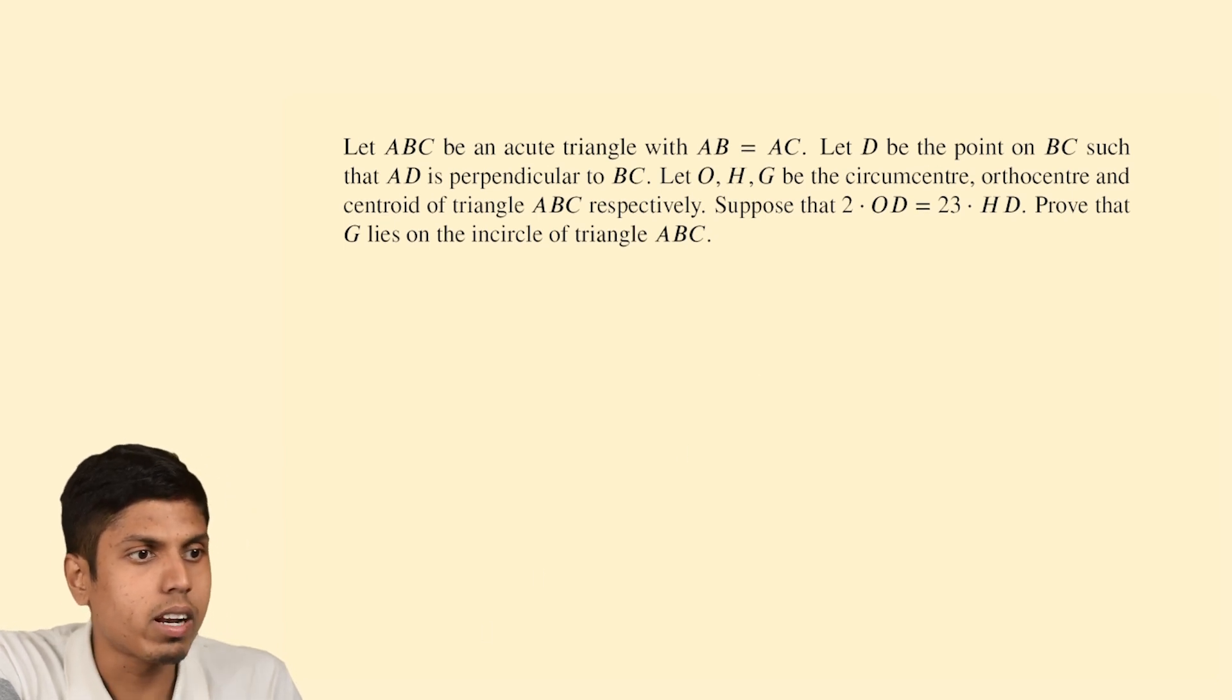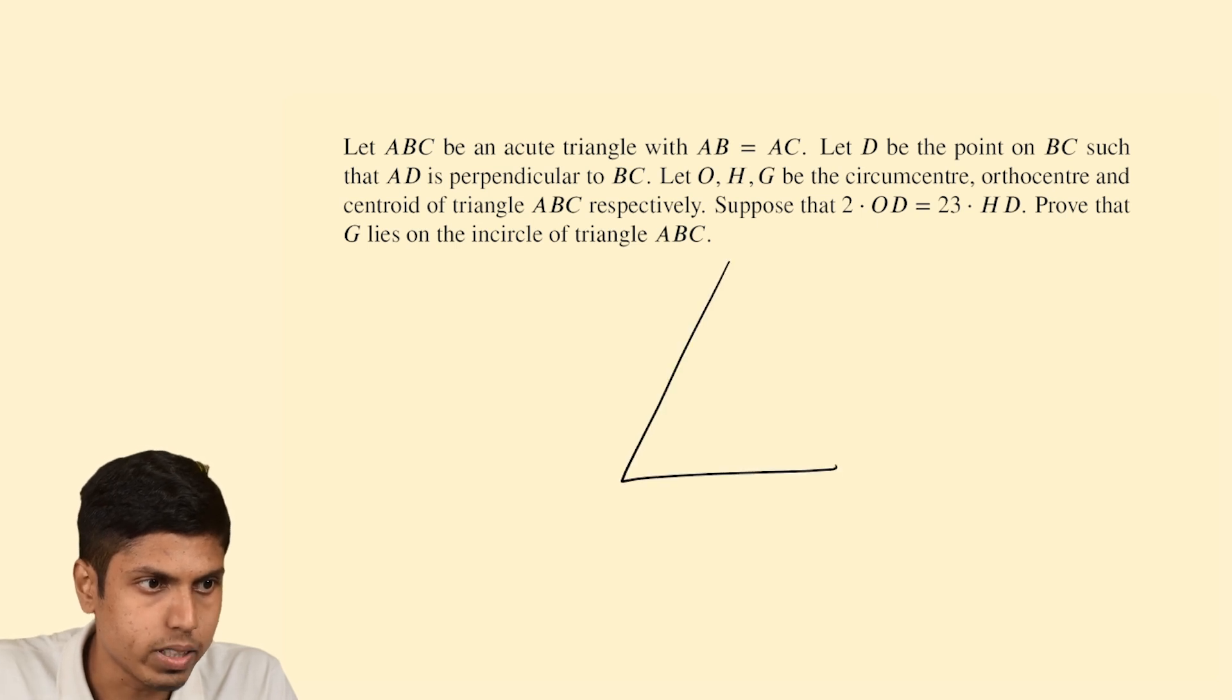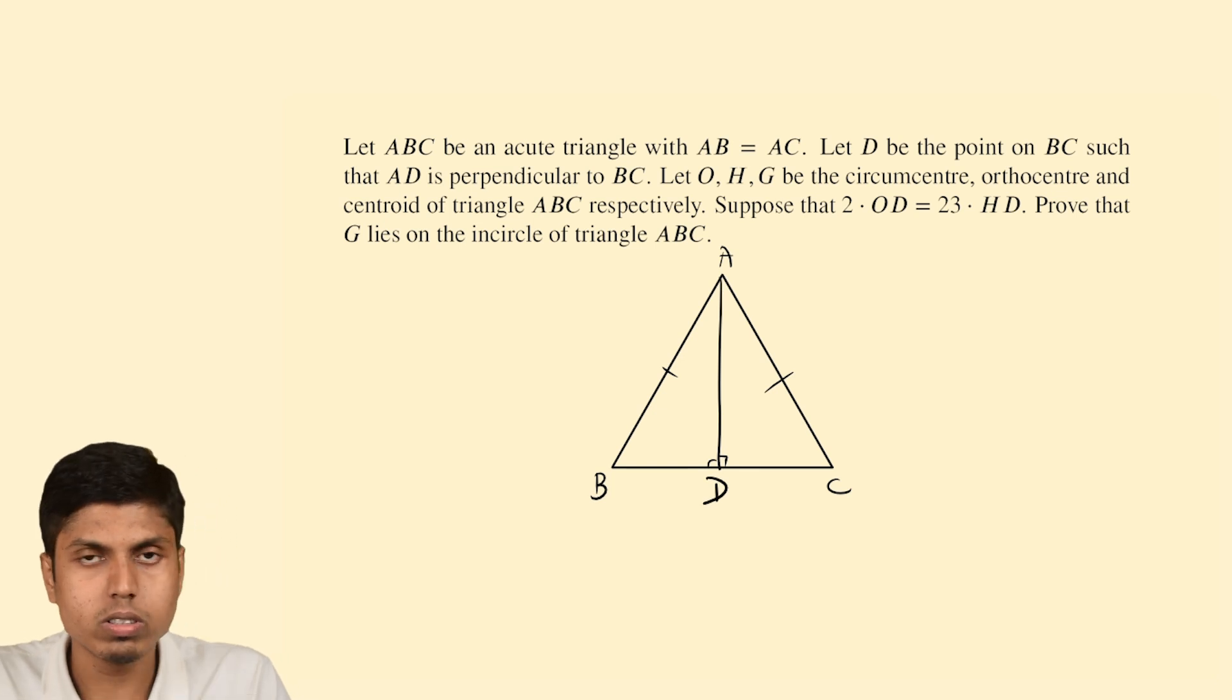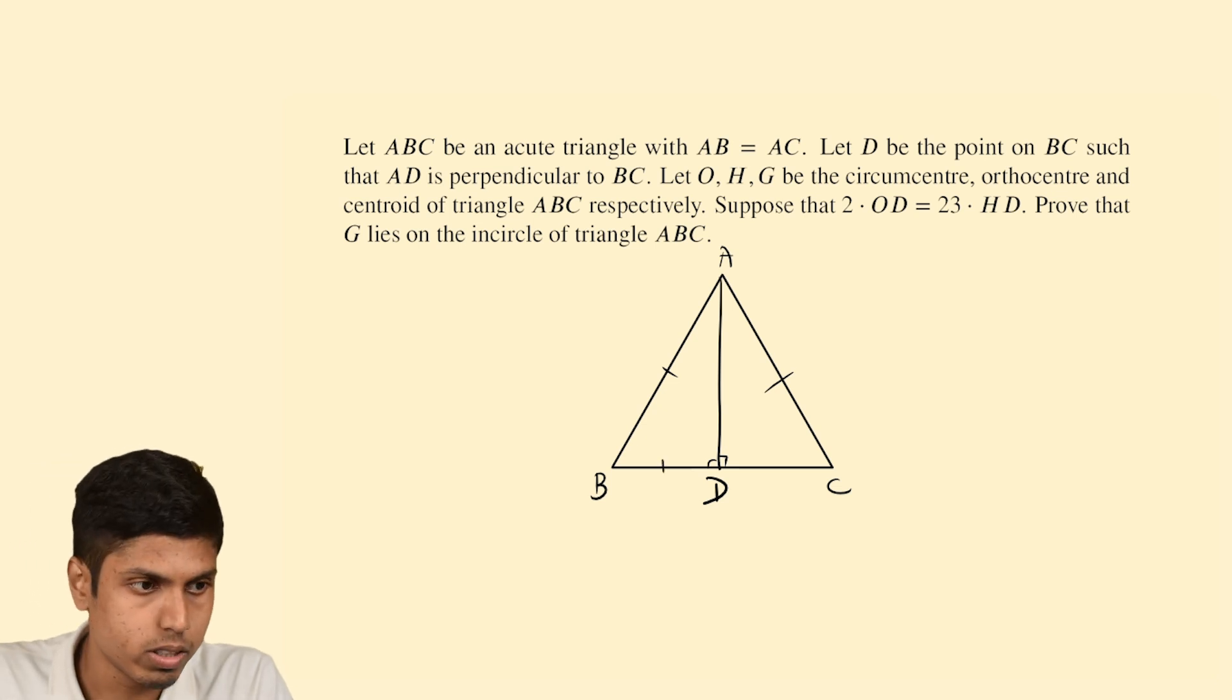We are given an acute angled triangle ABC and D be the point on BC such that AD is perpendicular to BC. So this clearly means suppose if this is ABC with AB equals AC then point D is the midpoint of BC.